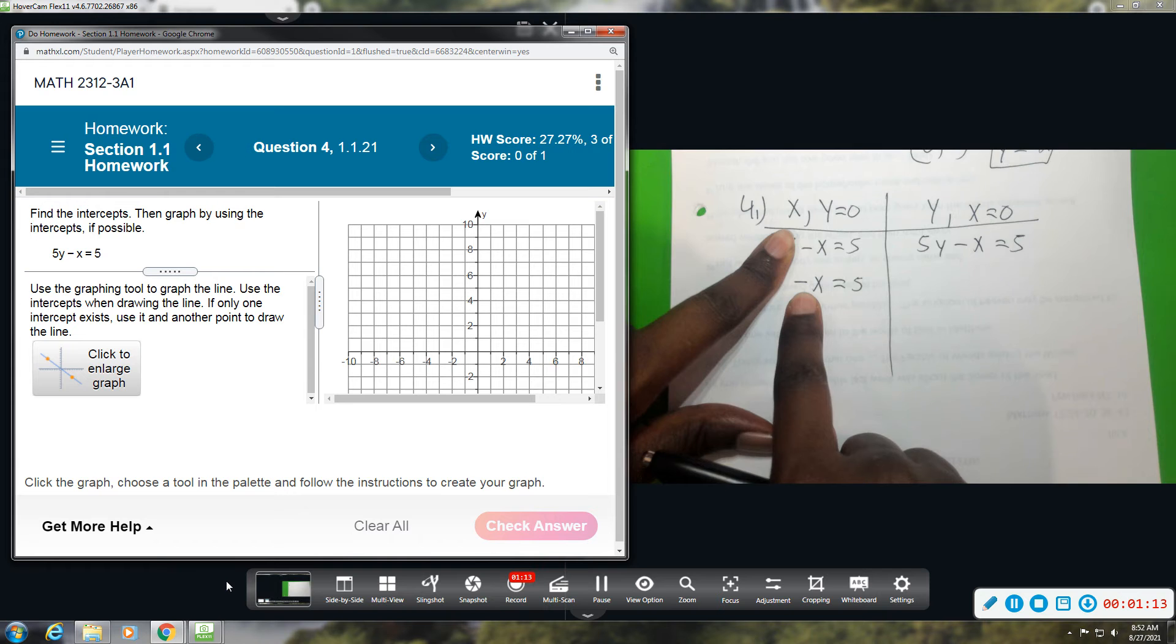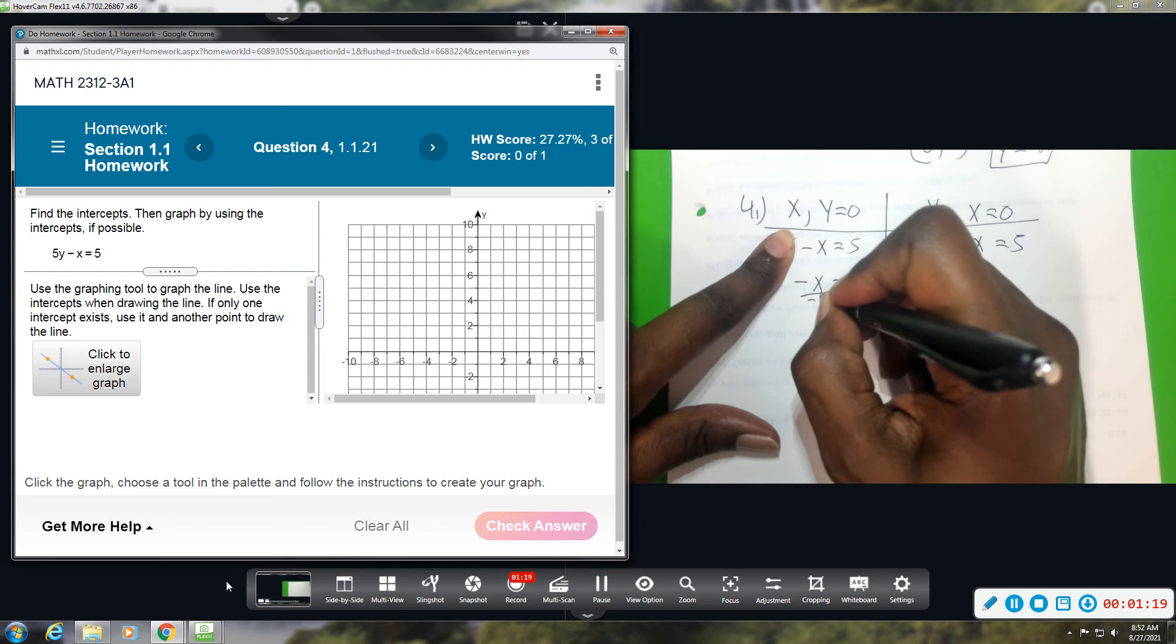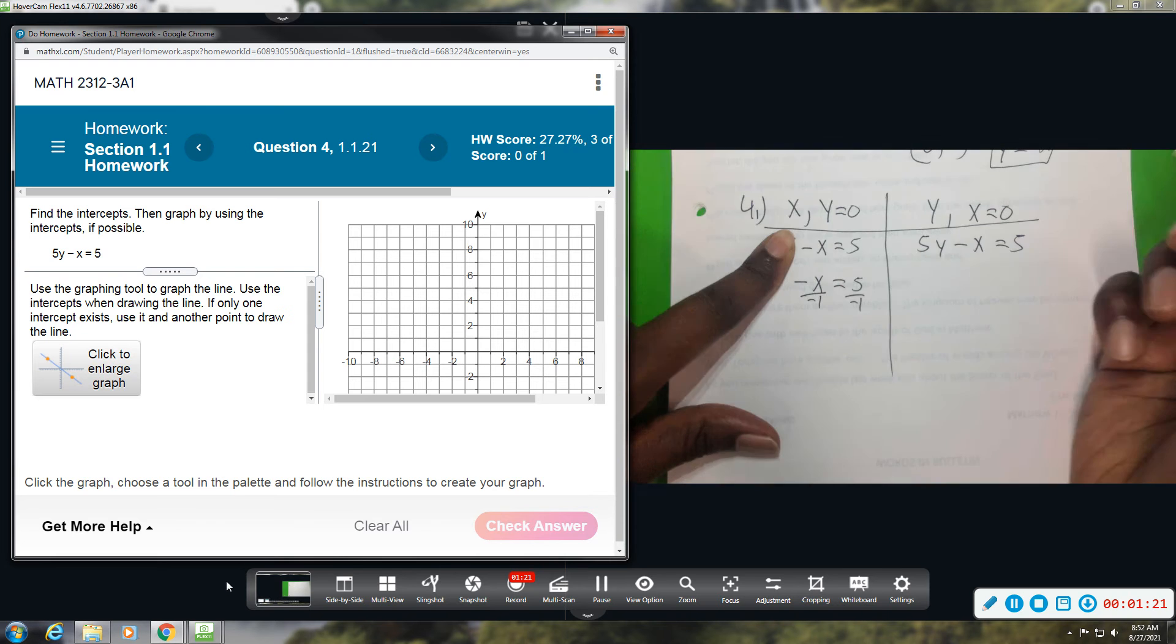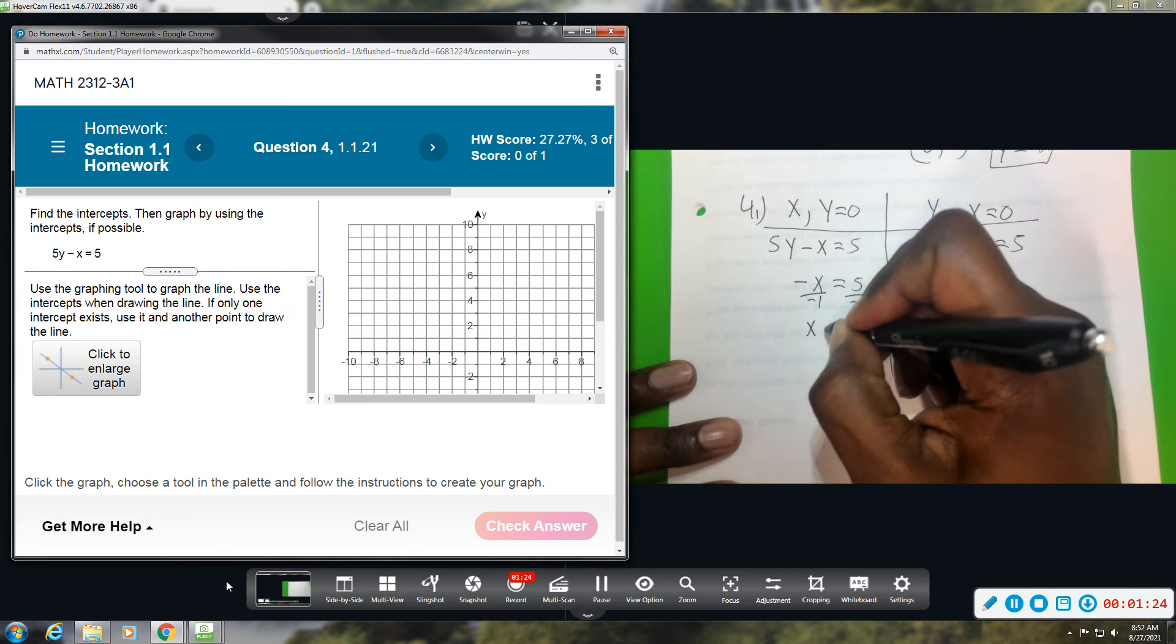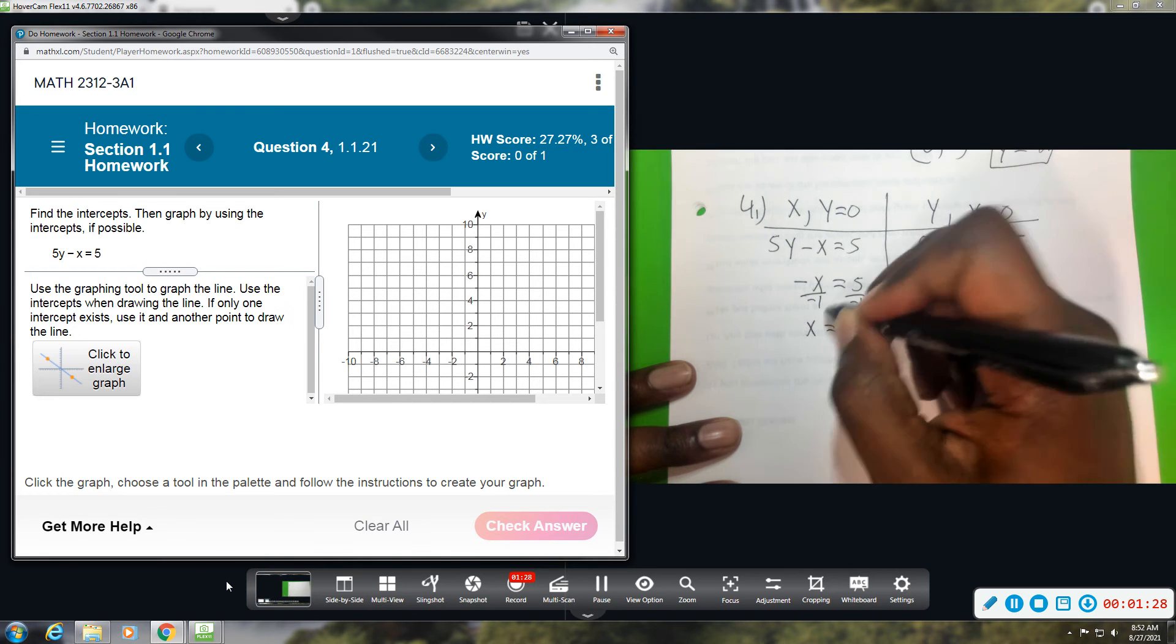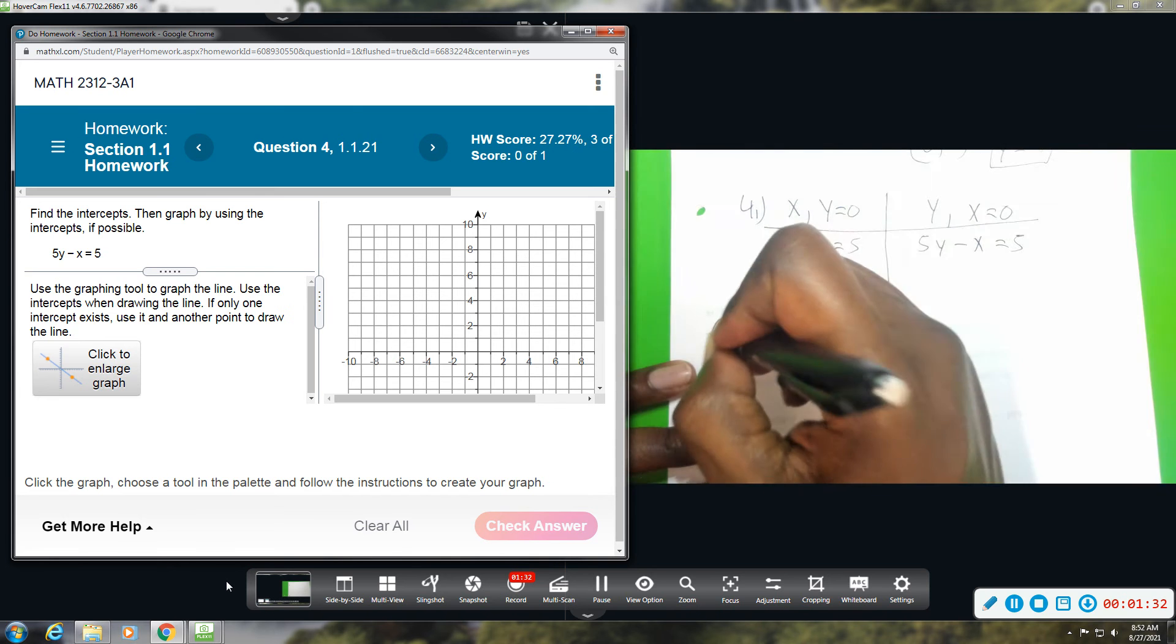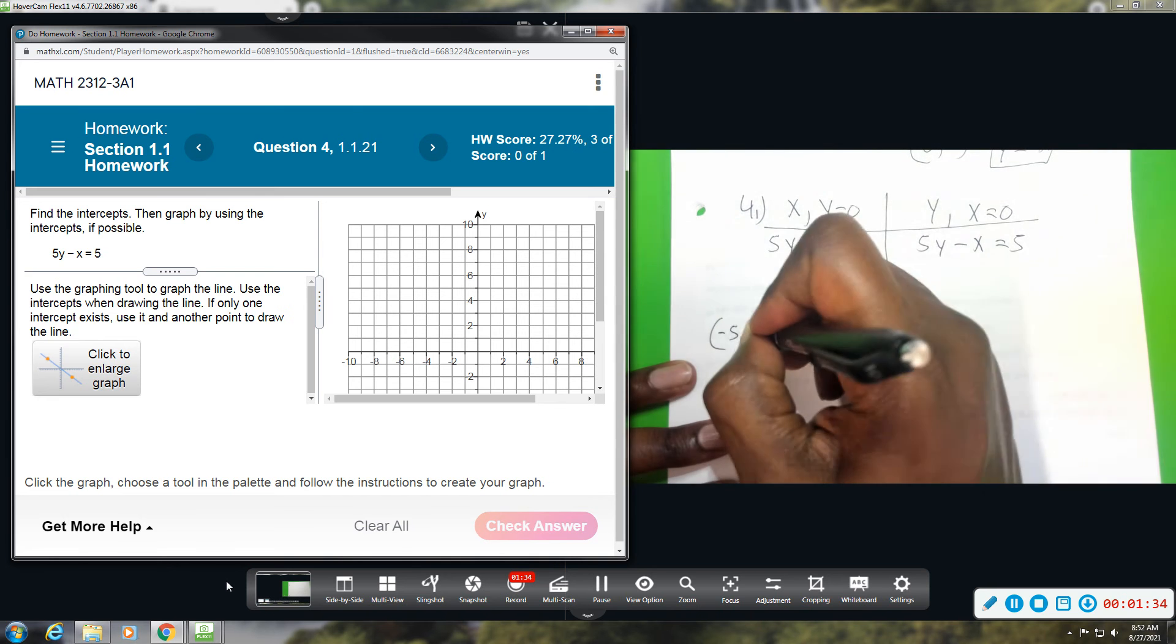Your variable cannot be negative, so I need to make this positive by multiplying by negative 1 or dividing by negative 1. When you divide by negative, it just changes the signs. So you get x, positive x now, equals, this will be a now negative 5. So this is the x value. The ordered pair would be negative 5, 0.